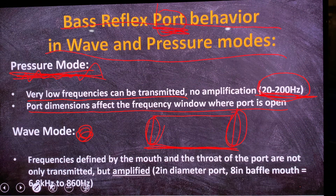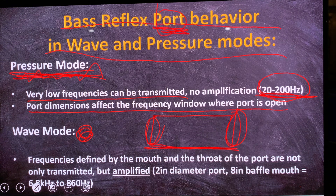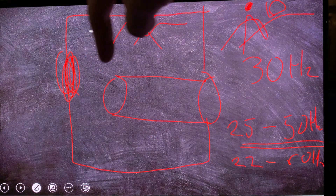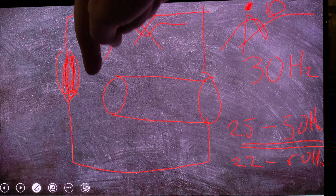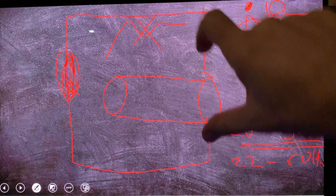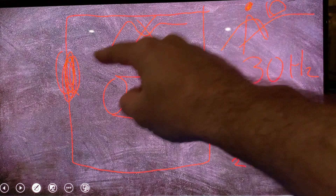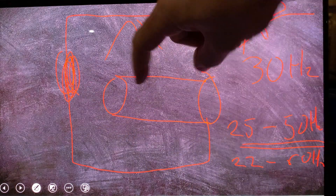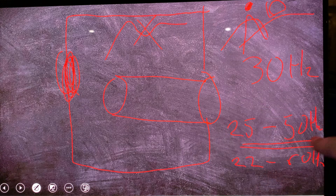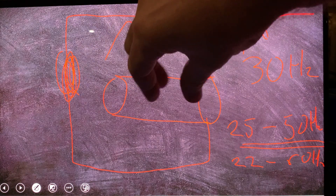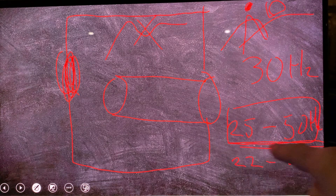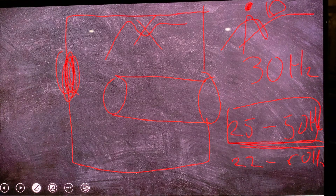That's a side track, but it helps explain how pressure mode works. Basically, the port presents a window between your room and your loudspeaker interior that is open only for a certain narrow range of frequencies. By changing the port length you can tune how wide that frequency range is and how big the amplification is.